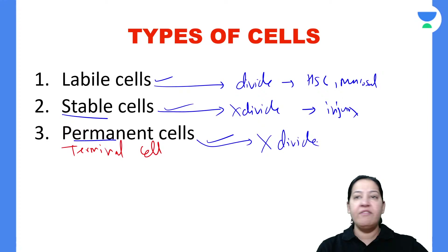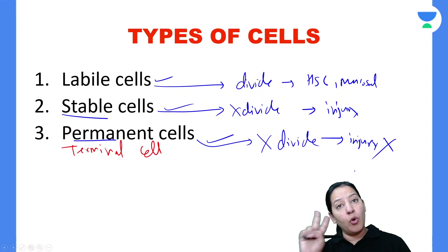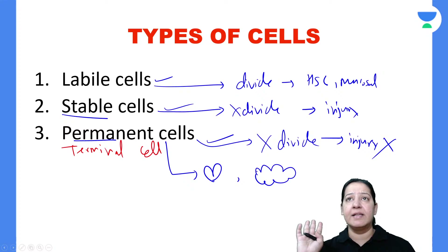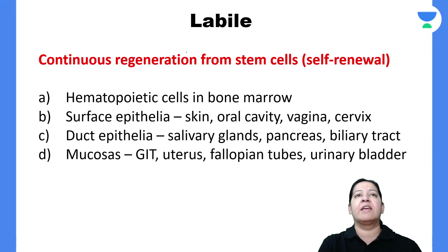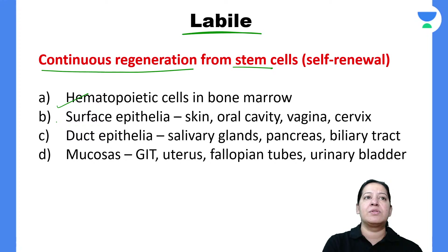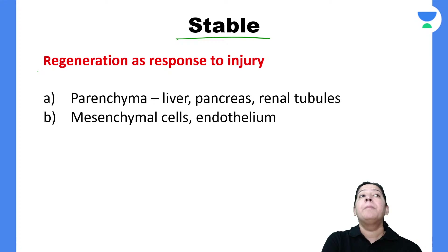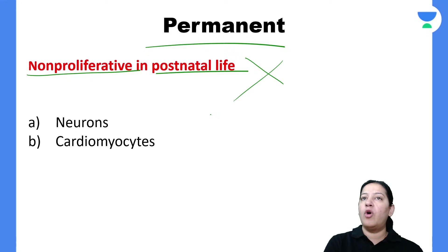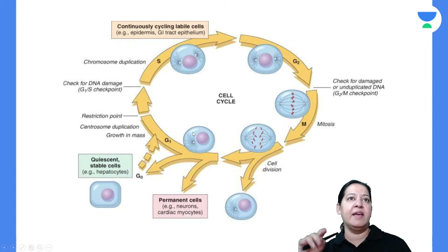Examples of stable cells are renal cells, hepatic cells, liver cells, and pancreatic cells. In postnatal life, liver, kidney, and pancreatic cells do not divide normally. But in response to injury, they have the capacity to divide. The third type are permanent cells — also known as terminal cells — which do not divide at all, not even in response to injury. The two examples are cardiomyocytes and neurons.